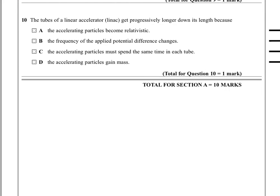Okay, question 10. The tubes of a linear accelerator, a linac, get progressively longer down its length because of one of these things. A, the accelerating particles become relativistic. B, the frequency of the applied voltage, potential difference, sorry, changes. C, the accelerating particles must spend the same time in each tube. And D, the accelerating particles gain mass.